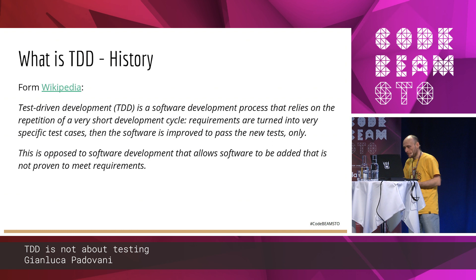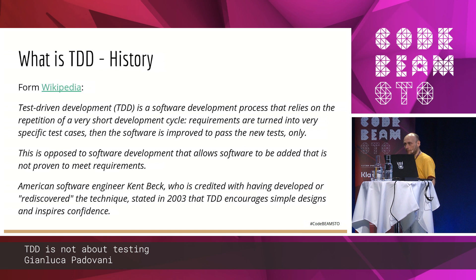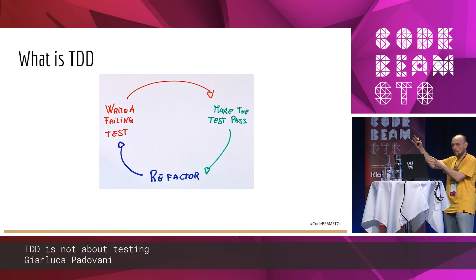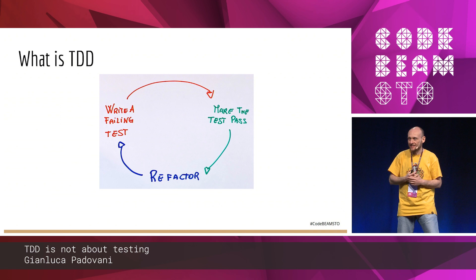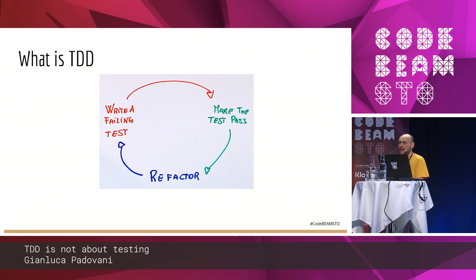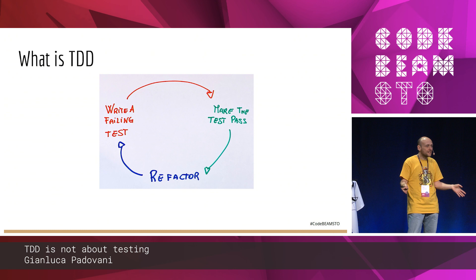TDD is a software development process that should help us to design software. This is opposed to software development where you try to rediscover the technique. As you can see — I am an Italian, a son of Giotto, Raffaello, and probably a bit of Leonardo — if I fail as a programmer, I have a career as an artist, as a painter. This is TDD: write a failing test, make the test pass, and refactor, and repeat again.